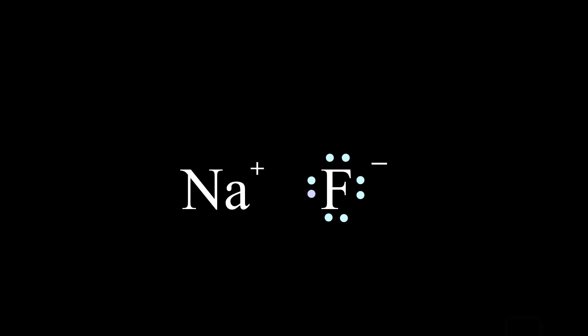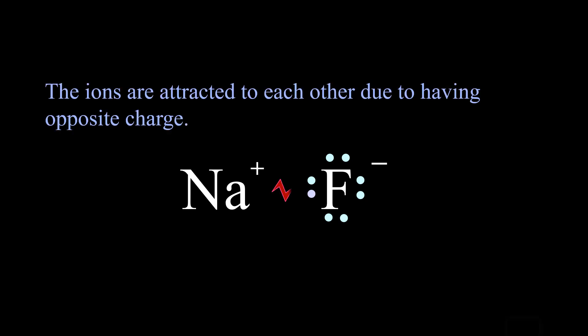Once that electron exchange happens, the result is a positive sodium ion and a negative fluoride ion. The ions are attracted to each other due to having opposite charge.